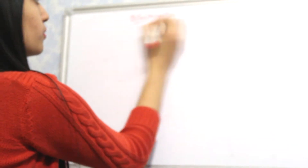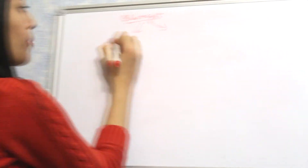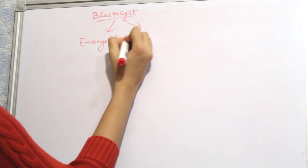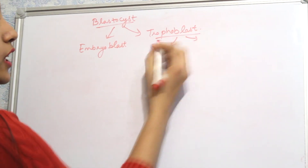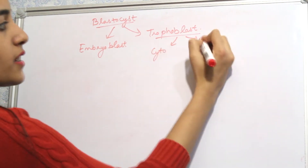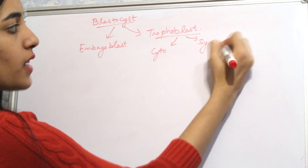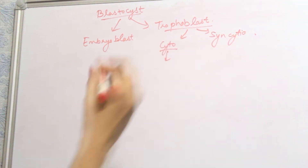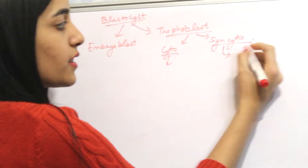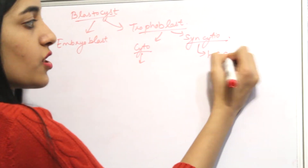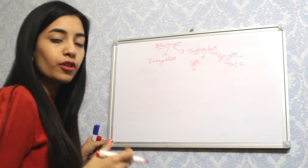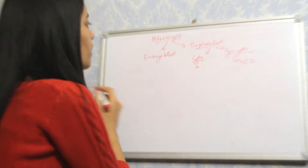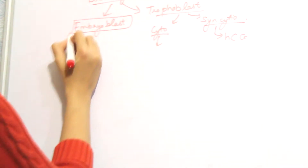The blastocyst is further divided into embryoblast and trophoblast. The trophoblast is further divided into cytotrophoblast and syncytiotrophoblast. Cytotrophoblast helps in the implantation of the embryo, and syncytiotrophoblast releases the hCG hormone which retains the corpus luteum and confirms pregnancy.